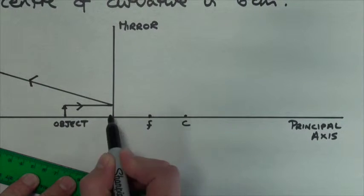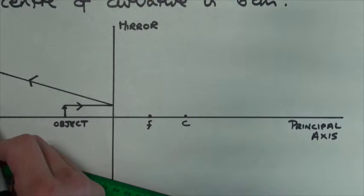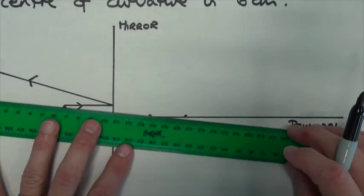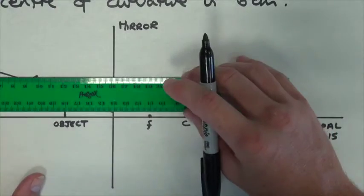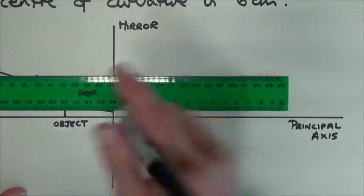The next one goes through the focal point, but when it hits the mirror, it diverges off parallel with the principal axis. So here I am, lining up with the focal point, and we're now going to go parallel with the principal axis.